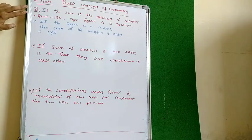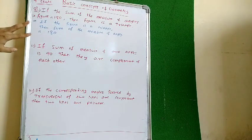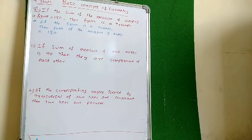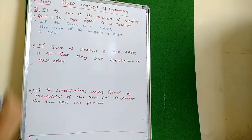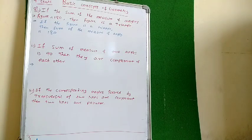Whatever was given, it is reversed. That is what reverse means — it is known as converse. Now the second one: if the measure of two angles is 90 degrees, then they are complement of each other.